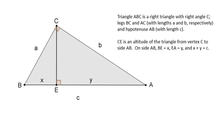Also, I've drawn an altitude from vertex C to the hypotenuse AB. Remember, an altitude is a line through a vertex perpendicular to the line containing the opposite side. So CE is perpendicular to AB. This divides side AB, or length c, into two parts—we'll call those parts x and y.